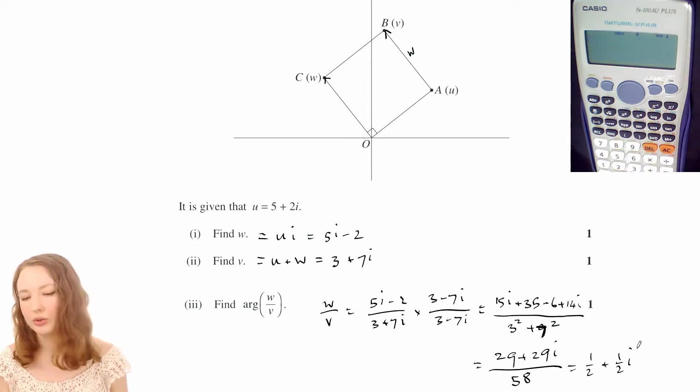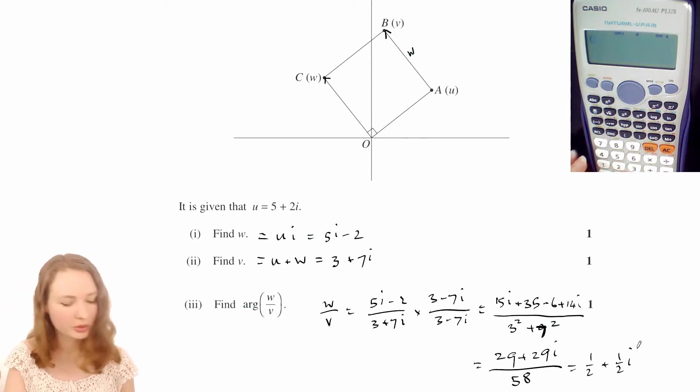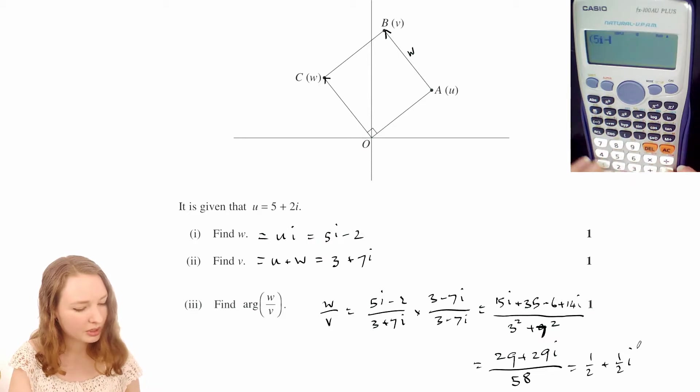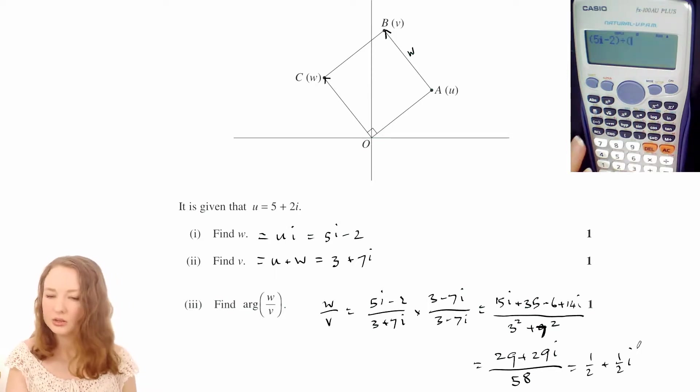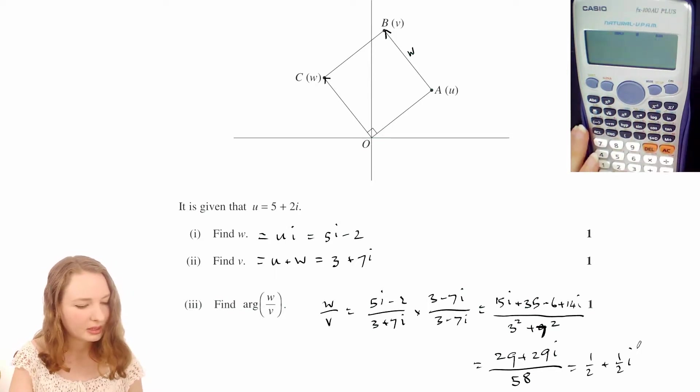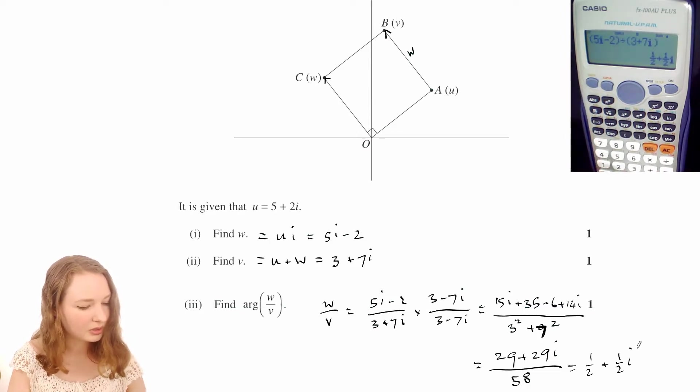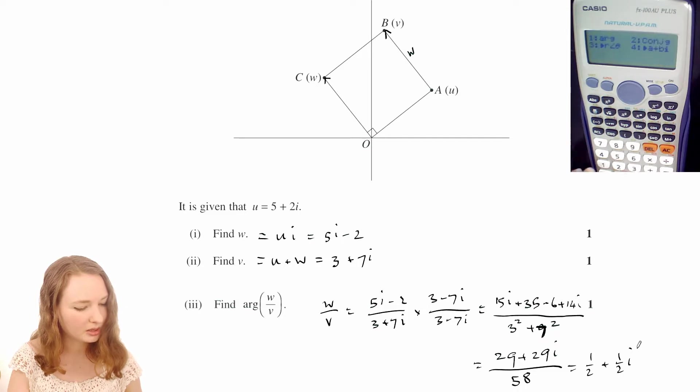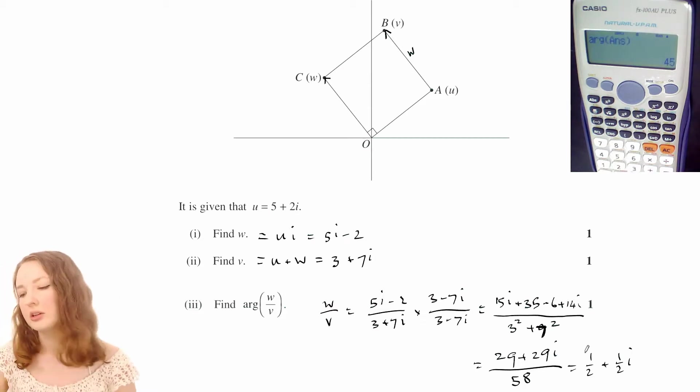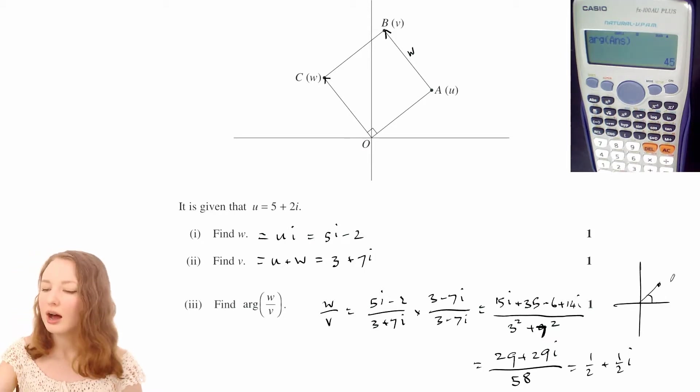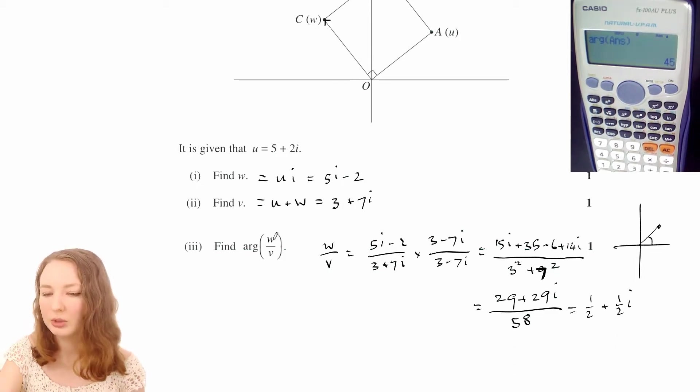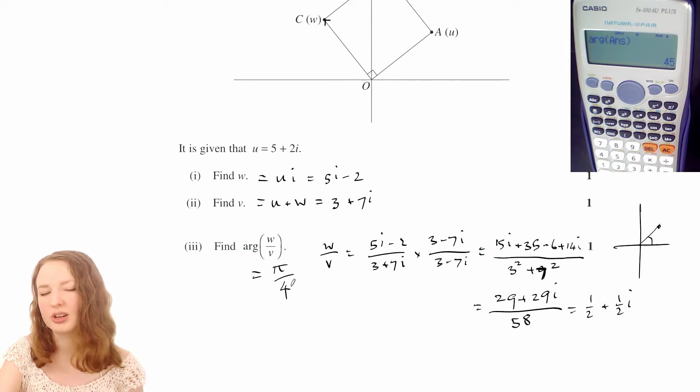Yeah, and then you can do that in the calculator also as well. So w was 5i minus 2, and then let's divide by 3 plus 7i equals that. And then you can also just do argument. So you hit shift and complex, and then 1 for argument. And that gives you 45. You can also see that that's going to be 45 because it's got the same x-coordinate as y-coordinate. So we would say that the argument of w over v is π over 4 because we should answer in radians.